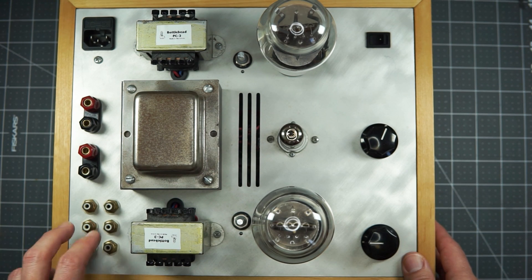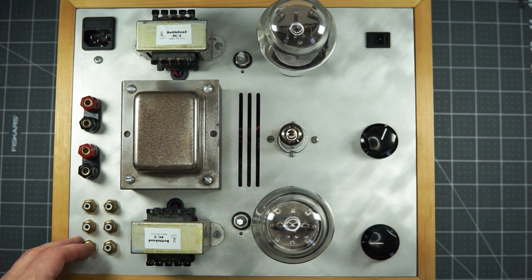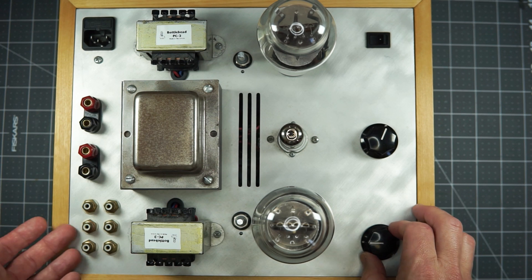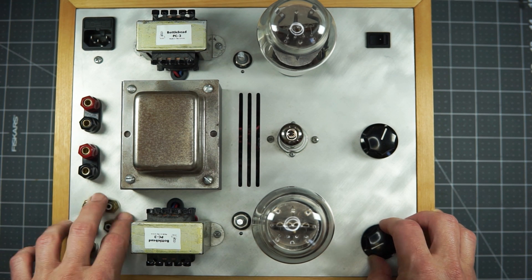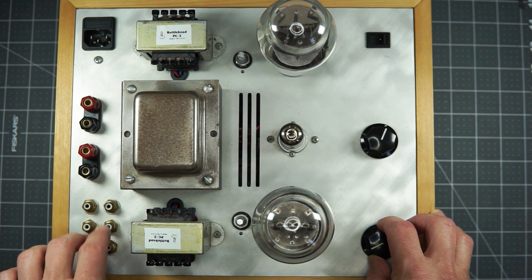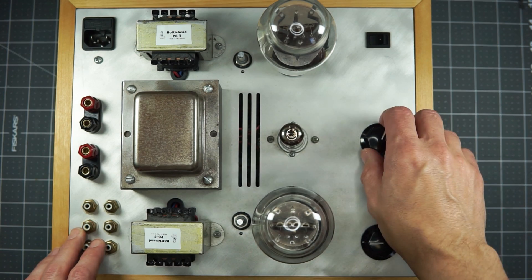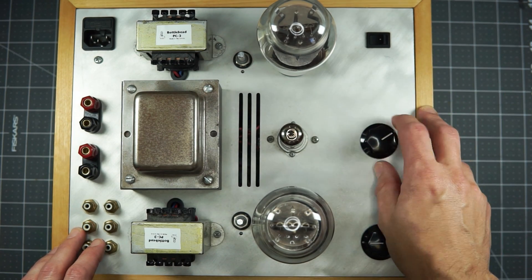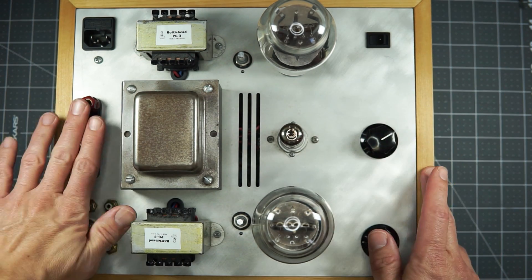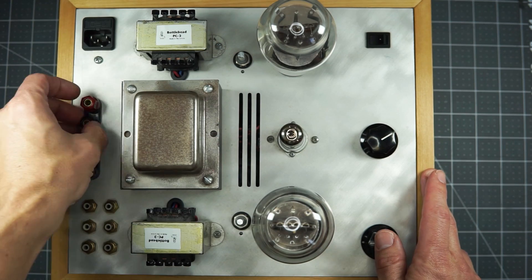Or in the case of this Stereomour, we've got an integrated amp, right, where you've got three inputs to choose from. So you think you'd be your DAC and your turntable and whatever, and then integrated volume control. And then this is a speaker amp. So only speaker taps out.